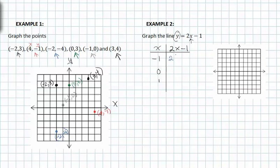We know that two times negative one minus one equals negative three. So now we've found a value for y when x equals negative one, and we can plot that point starting at the origin: x is negative one, y is negative three — and that is our first coordinate point (-1, -3). If we put zero in for x into the equation, we get negative one. So our next coordinate point is (0, -1).